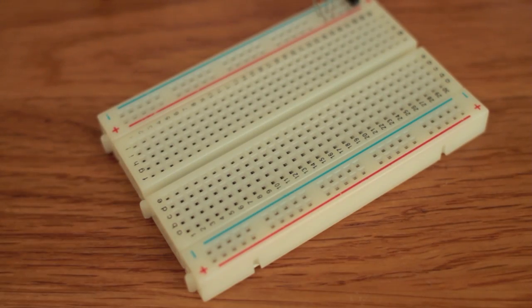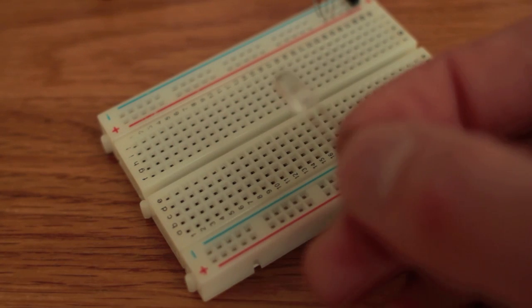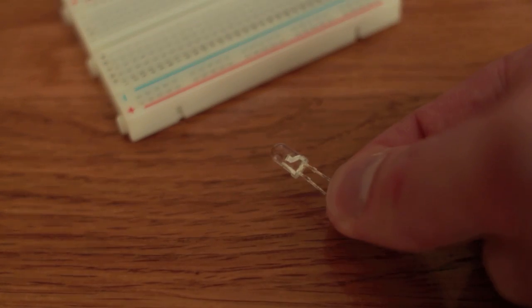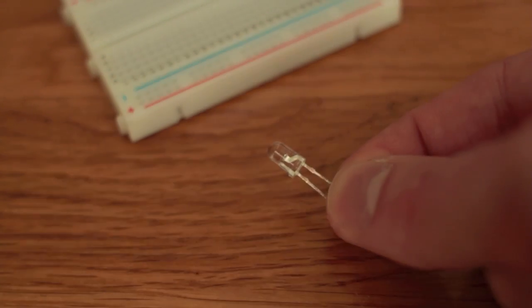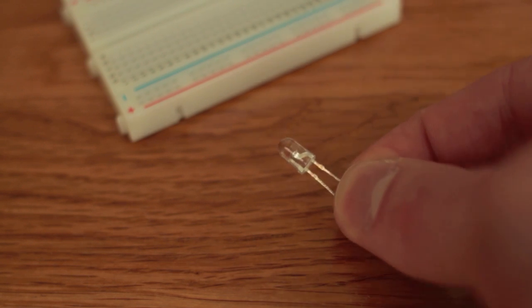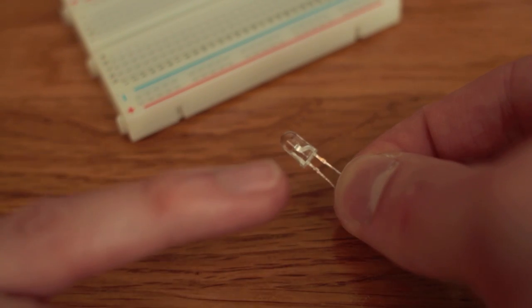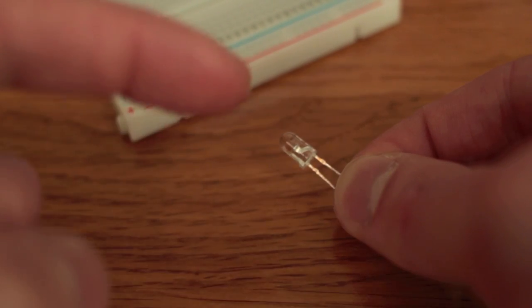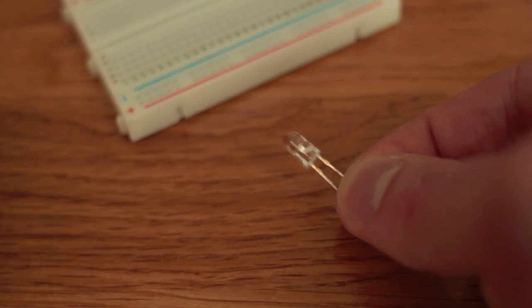To hook it up, we first need to identify that the ambient light sensor is really a photo transistor that has a collector and an emitter pin, so we have to identify which one is which. If we look at this, you can see there's actually a straight segment inside it and a curved segment. The straight segment is the collector and the curved segment is the emitter.